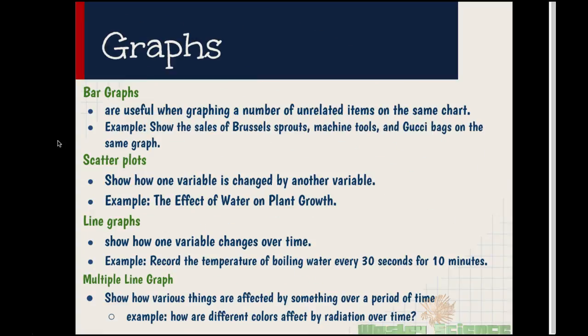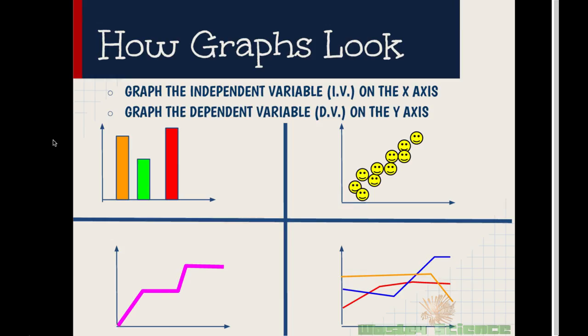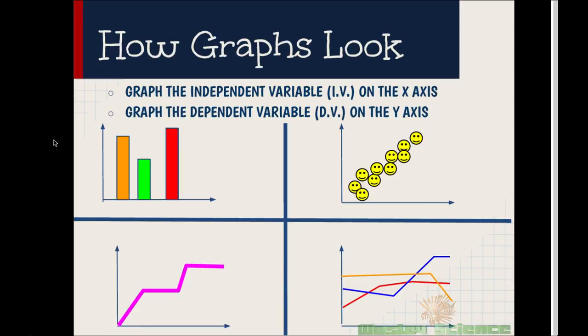In high school and middle school, you will commonly see four graphs. The first one is the bar graph. This one is used when graphing a number of unrelated items on the same chart. And then there is the scatter plot. The scatter plot shows how one variable is changed by another variable. In this one, you do not connect the dots together. You actually will create a trendline and I will show you that in a little bit. The third one is the line graph, which shows how one variable changes over time. Students often get scatter plots confused with line graphs. One suggestion that I have is a way to remember is when you have time, make a line. And then finally, we have the multiple line graph and this shows how various things are affected by something over the same time frame. Let's see if you can identify the four types of graphs by just looking at this. I'll give you a second here. All right, so you can see that the bar graph is on the top left, the scatter plot is on the top right, the line graph is on the bottom left, and the multiple line graph is on the bottom right.